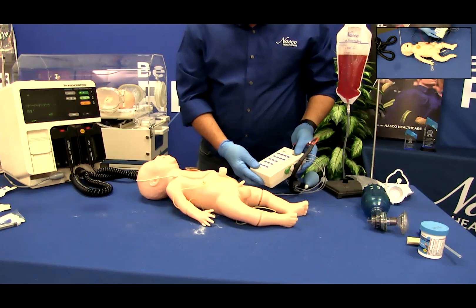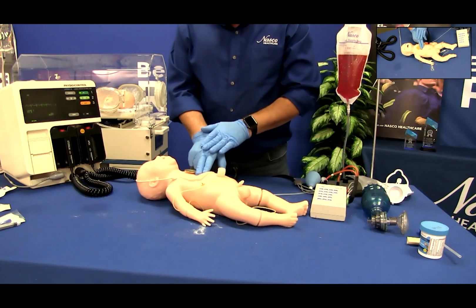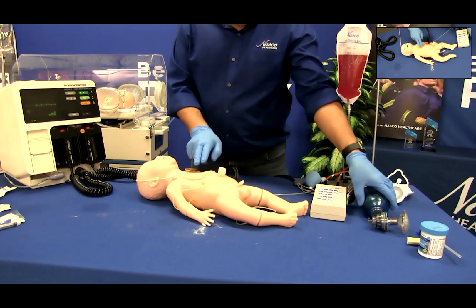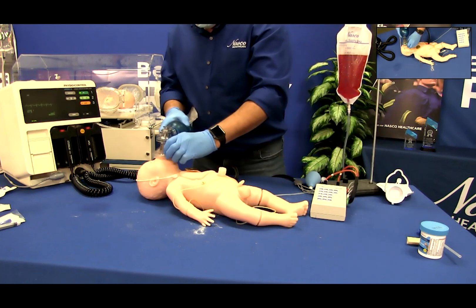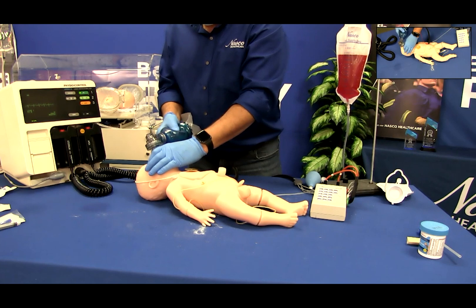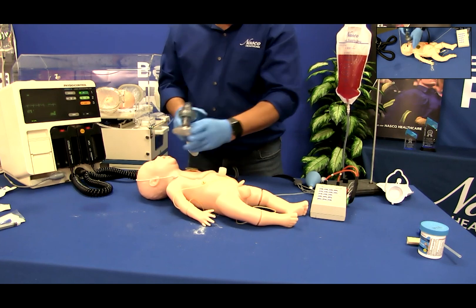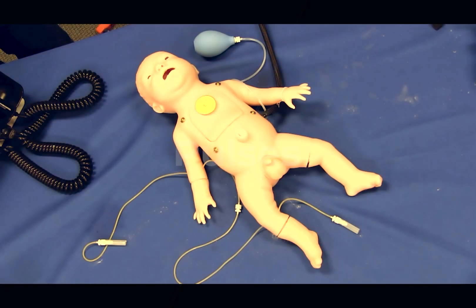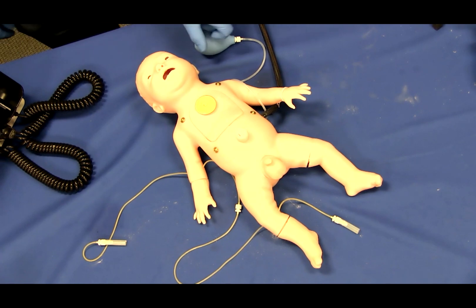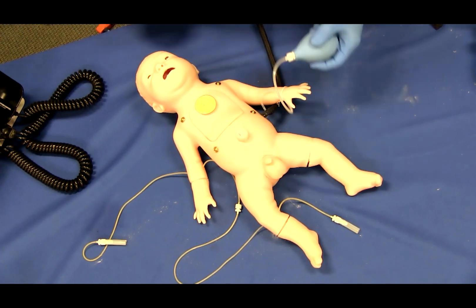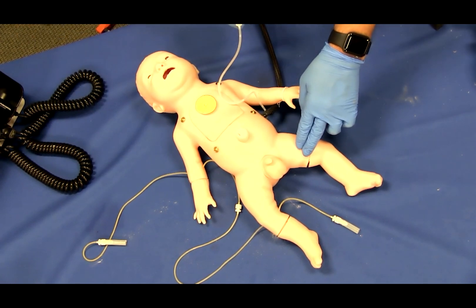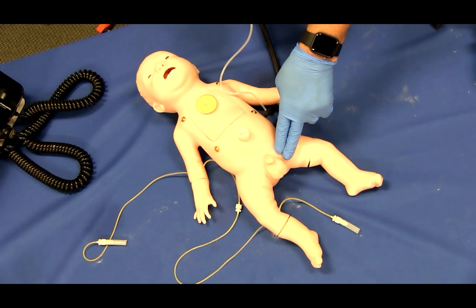CPR may also be performed on Charlie. Follow all local or national CPR standards for infants. To perform a pulse check on Charlie, gently pump the inflation bulb to activate the pulses as desired in any of the seven functioning pulse sites.